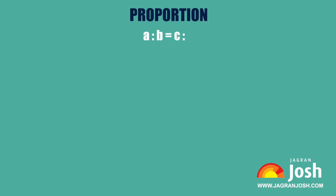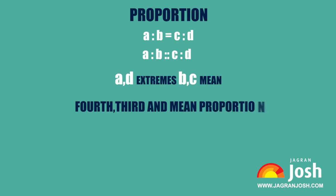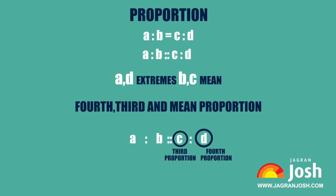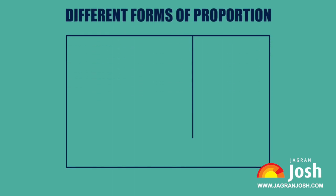Proportion is the equality of two fractions, that is A is to B equals C is to D. This is represented as A is to B and C is to D, where A and D are called extremes and B and C are called the means. In A is to B and C is to D: D is the fourth proportion of A, B, and C; C is the third proportion of A and B; and the mean proportion of A and B is the square root of AB.